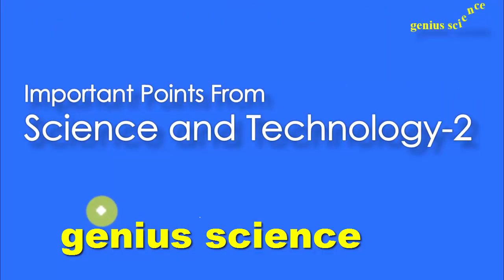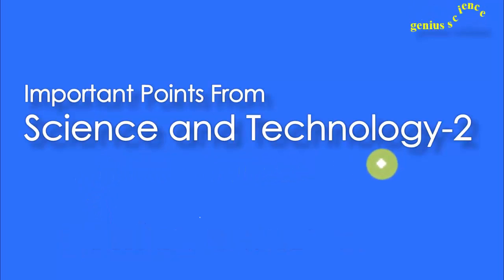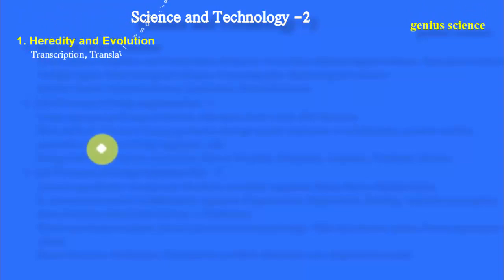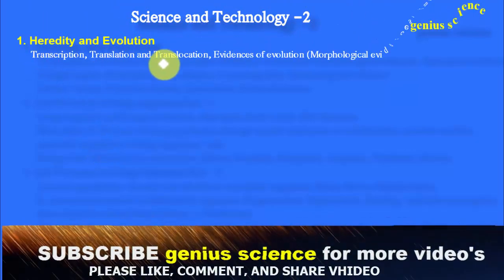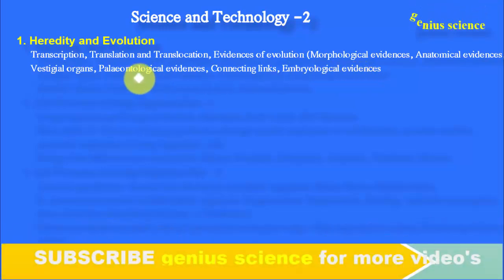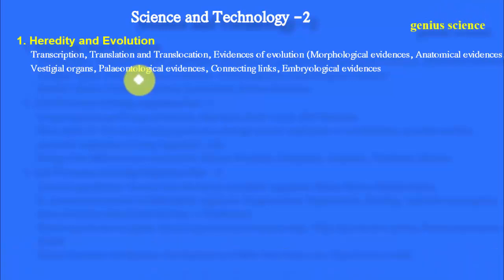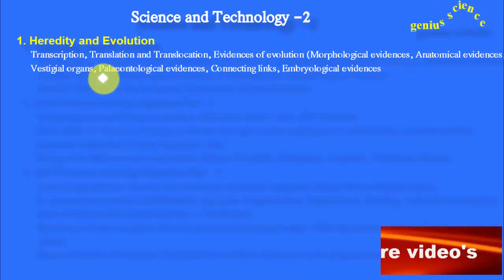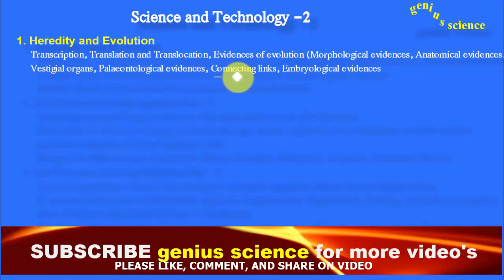Now we are going to discuss about Science and Technology Paper No. 2 important questions. The first chapter is Heredity and Evolution. Topics include Transcription, Translation, Translocation, and Evidence of Evolution — such as Morphological Evidences, Anatomical Evidences, Vestigial Organs like the Appendix in our body which is not useful nowadays but is present and can sometimes produce pain in the stomach. Also Paleontological Evidences, Connecting Links, and Embryological Evidences are important questions.